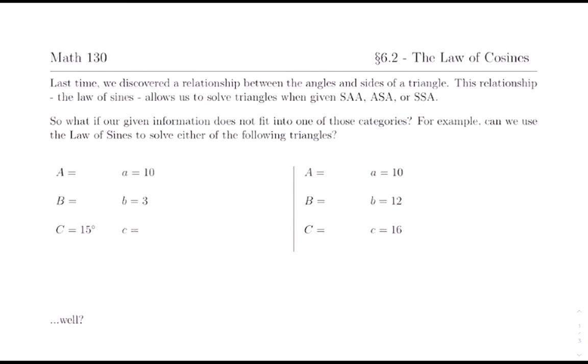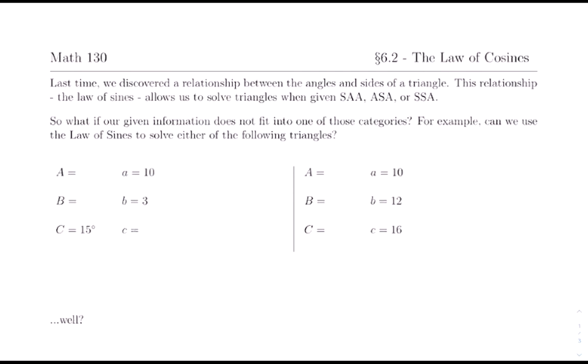For 6.2 we're going to learn about the Law of Cosines. In 6.1 we learned about the Law of Sines — how to solve a triangle when given side-angle-angle, angle-side-angle, or side-side-angle (the ambiguous case). But what if the information is different? Could we use the Law of Sines to solve triangles where we don't have a side-angle pair, or where we have side-side-side with no angles? We can't use the Law of Sines in those cases.